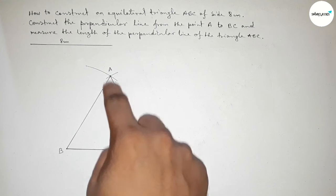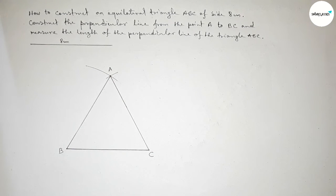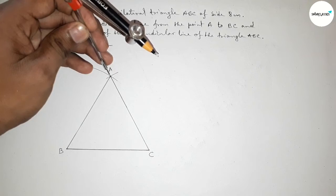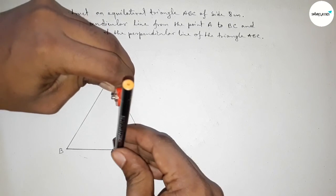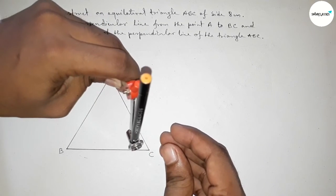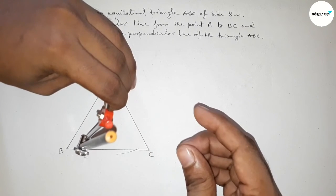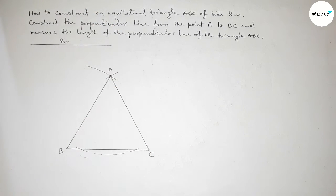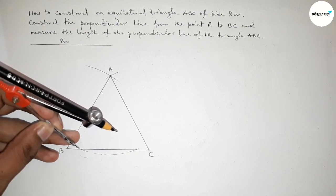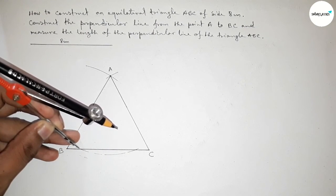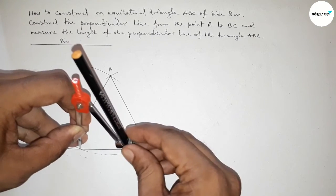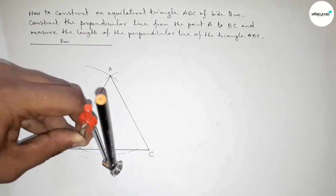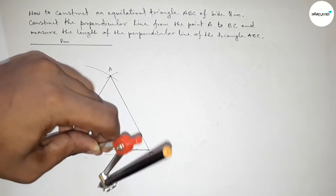Now drawing a perpendicular line from the point A to line BC. Putting the compass on the point A and taking a length, then drawing an arc which meets the line BC at two points. Now putting the compass on one of those points and taking a length greater than half of that arc.